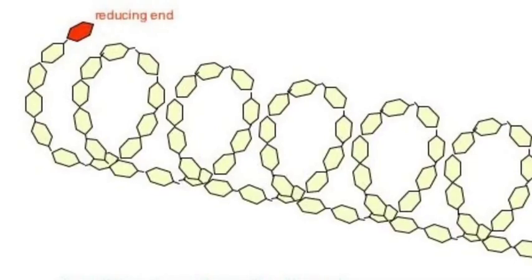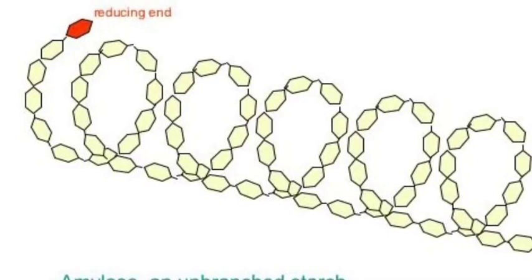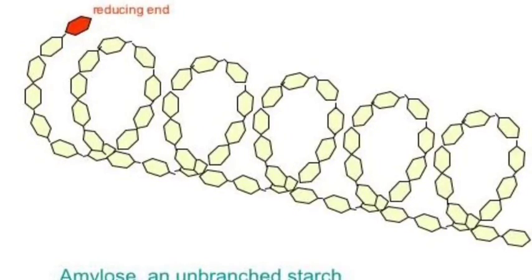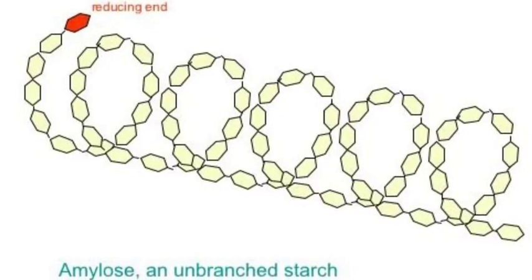Joining many alpha-glucose molecules together forms amylose. Amylose can consist of many thousands of glucose molecules. The long chains of amylose coil into a spring because of the shape of the glucose molecules. This makes amylose quite compact.